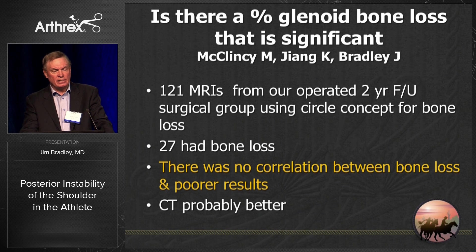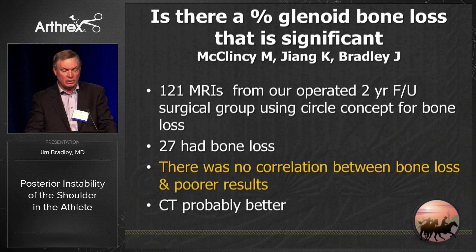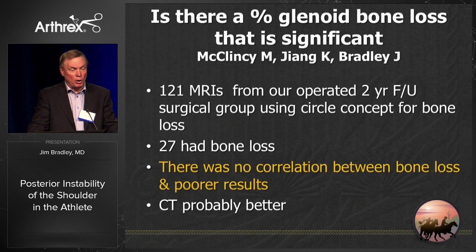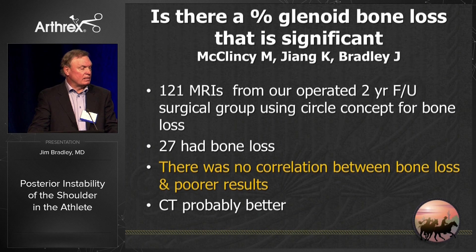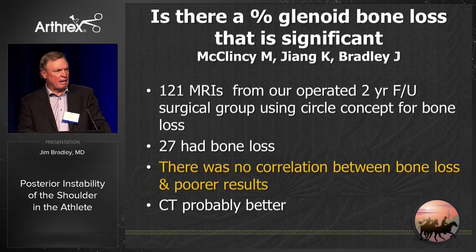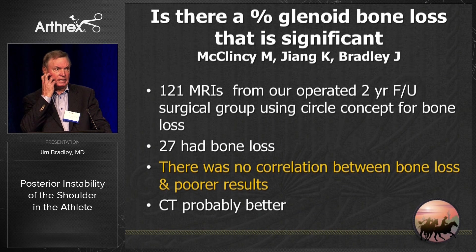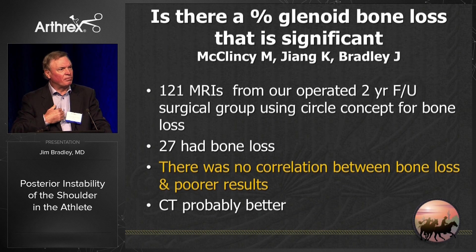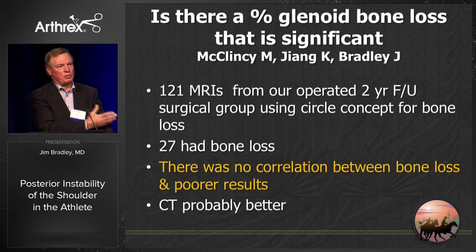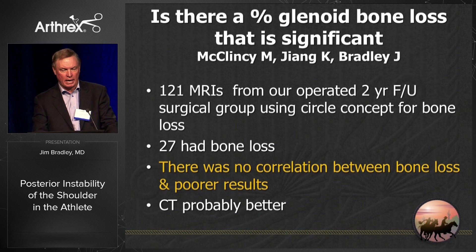The question I've been asking is: is there a percentage of glenoid bone loss that is significant? From 121 MRIs looked at over a two-year follow-up — 27 had bone loss — we found absolutely no correlation between bone loss and poor results. That's in contrast to J.T. Tokish, who says it should be about 13%. We use the perfect circle technique, but we're still looking at other techniques. MRI is not as good as CT scan, but we get MRIs to evaluate our patients, so we can't easily get a normal group — but we're working on it.